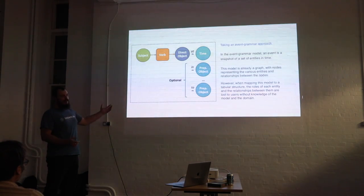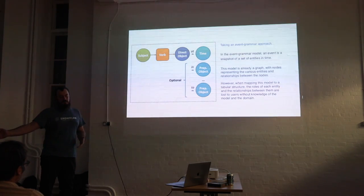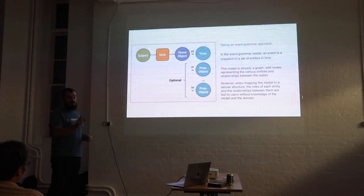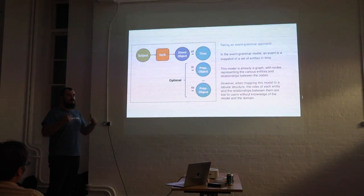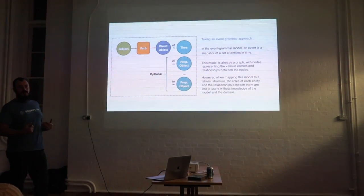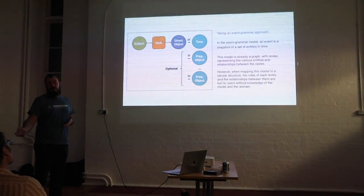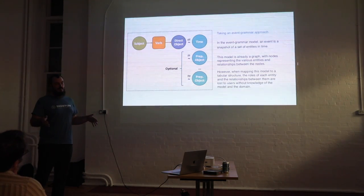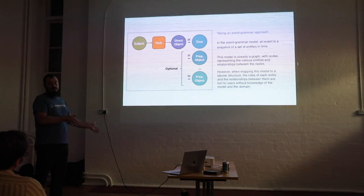The main downside of this approach is that when you try to fit this data into a table, you lose a lot of the richness. Consider a video game where player 1 kills player 2 with a sword. In a table, you'd have columns for player 1, player 2, a kill event type, a timestamp, and a weapon column. But without domain knowledge, there's no way to know who killed whom. Was player 1 the killer, or player 2? Or, if you have no idea of the domain, maybe it was the sword who killed both players.